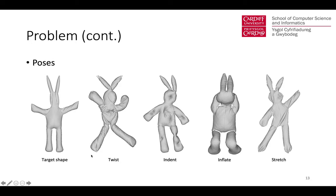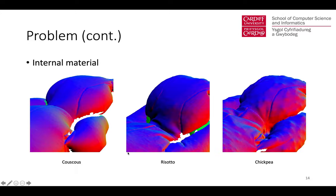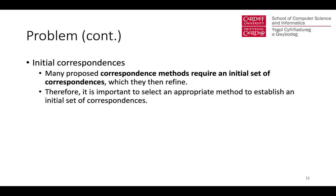The twist deformation presents particularly challenging local geometric changes. For each pose, we also perform three scans with three different internal materials: couscous, risotto, and chickpea, filling the same amount of each. By varying the internal material, the local surface appearance actually changes. Many proposed correspondence methods require an initial set of correspondences which they then refine, so it is important to select an appropriate method to establish an initial set of correspondences.